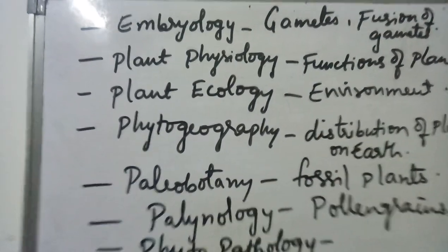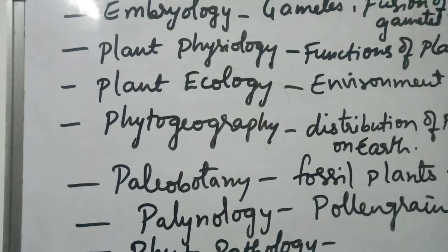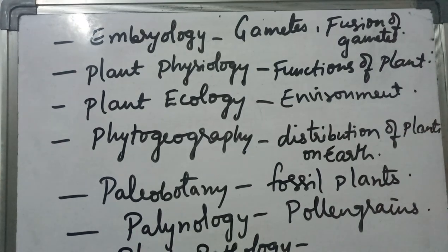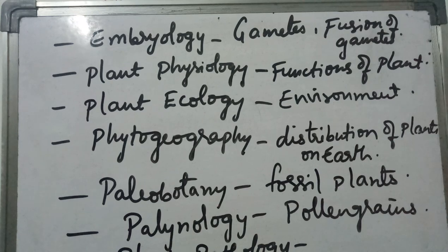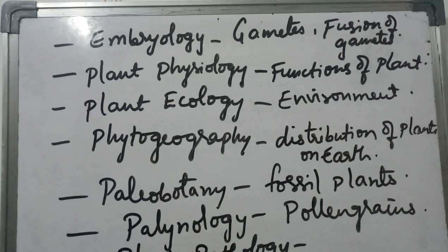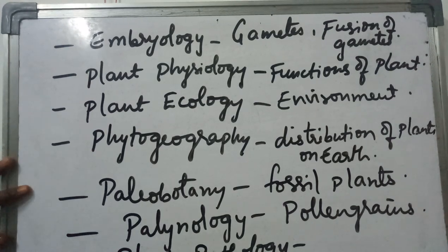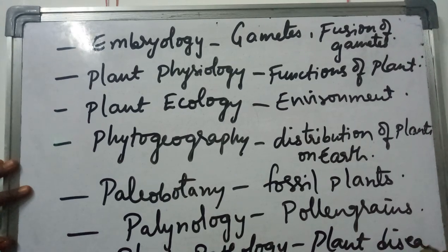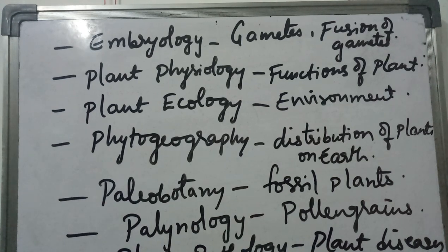Coming to phytopathology — phytopathology includes the study of different diseases caused in plants. How diseases are caused in the plant body, how they spread from one plant to another, and what different organisms cause diseases in the plant body — all these things come under phytopathology, which is a branch of botany dealing with plant diseases.